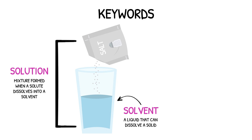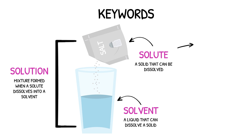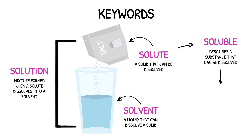A solvent is a liquid that can dissolve a solid, and in this scenario, the solvent would be the water — this is the most common solvent found in mixtures. A solute is a solid that can be dissolved, and in this scenario, the solute would be the salt. All solutes are described as being soluble, which simply means they are able to dissolve. In contrast, any substance described as insoluble cannot be dissolved.